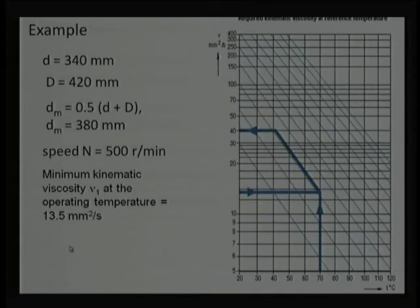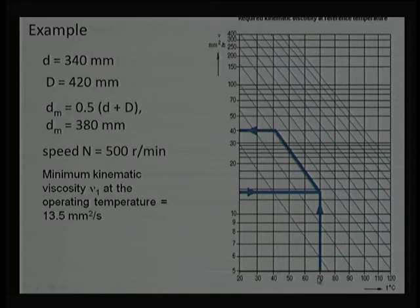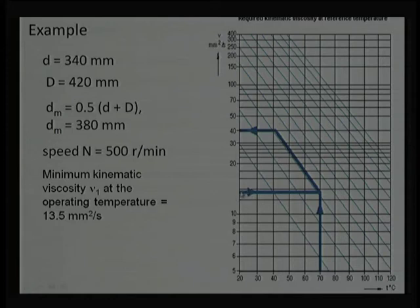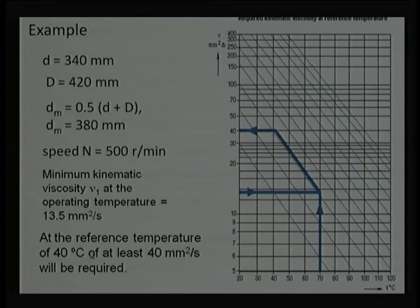If the operating temperature is higher — say 70 degrees instead of room temperature 40 degrees — we use the viscosity-temperature chart. Drawing lines from 13.5 centistokes at 70 degrees and then mapping back to 40 degrees room temperature, the intersection gives us the viscosity to select at room temperature: 40 centistokes. So we should choose lubricating oil with this viscosity. This is an initial selection; it does not depend much on load or material, but we can subsequently do detailed EHD analysis.